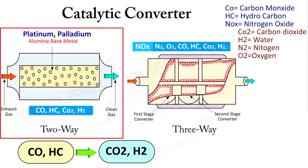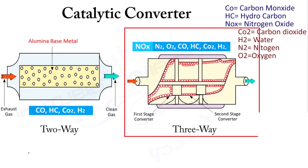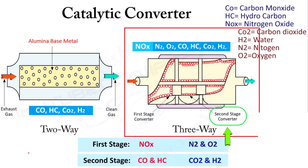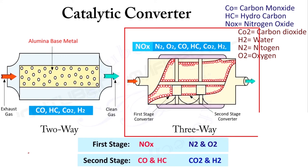Next is the three-way catalytic converter, which is used in petrol engines. Inside this converter there are two stages. In the first stage, NOx (nitrogen oxides) is converted into N2 and O2. In the second stage, HC and CO are converted into H2O and CO2. After the first stage, air is supplied with the exhaust gases so oxygen is mixed with HC and CO.